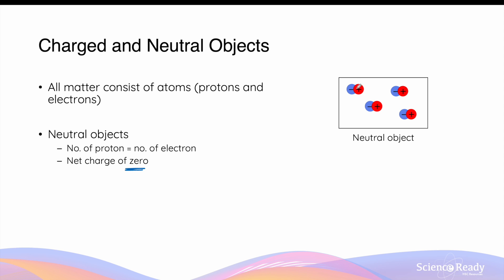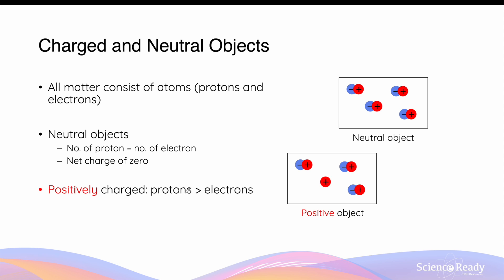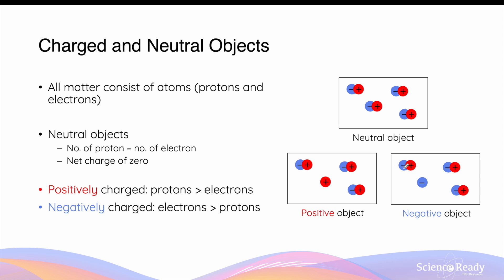In this diagram, we have four protons and four electrons. The total positive charge is neutralized by the total negative charge, contributing to a net charge of zero. If we have more protons than electrons, we will have an excess of positive charge, making the whole object positively charged overall. Vice versa, if we have more electrons than protons, we will have an excess of negative charge, making the object negatively charged.